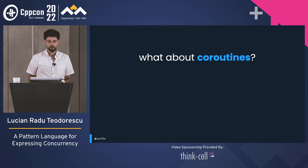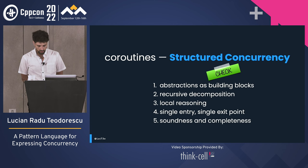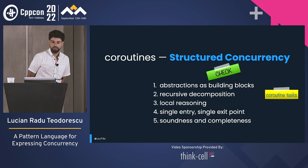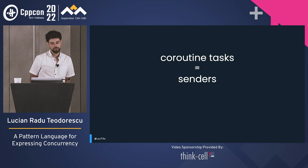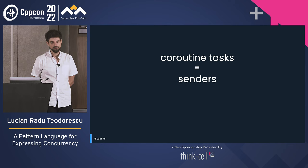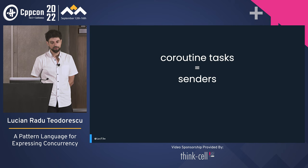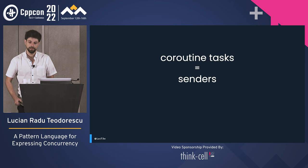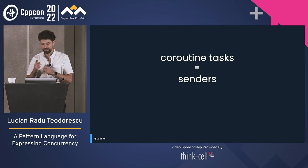What about coroutines? Do they match structured concurrency? It turns out they do. The primitive is a coroutine task. There is a slightly higher performance cost, but a coroutine can be equivalent to a sender. The P2300 proposal has facilities to interop between coroutines and senders. I'll show examples of going from sender to coroutine and from coroutine to sender.